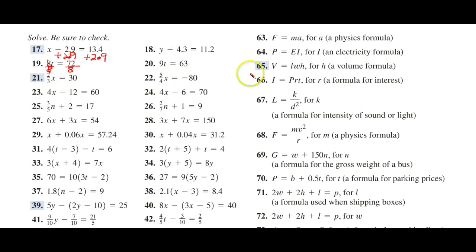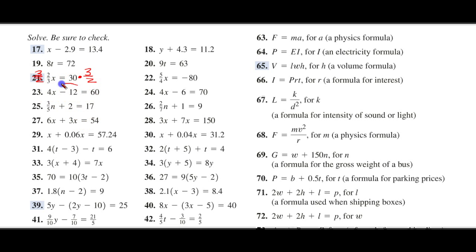Now, for twenty-one, let's clear it up a little bit here. We're going to use the reciprocal, which would be three halves, both sides. Now, here we're going to add twelve, or just transpose it. Adding twelve to both sides.